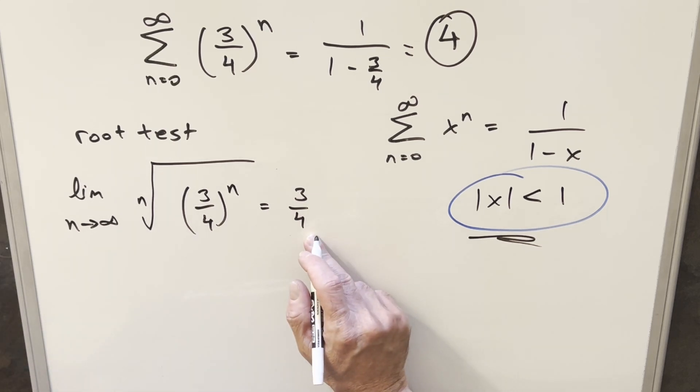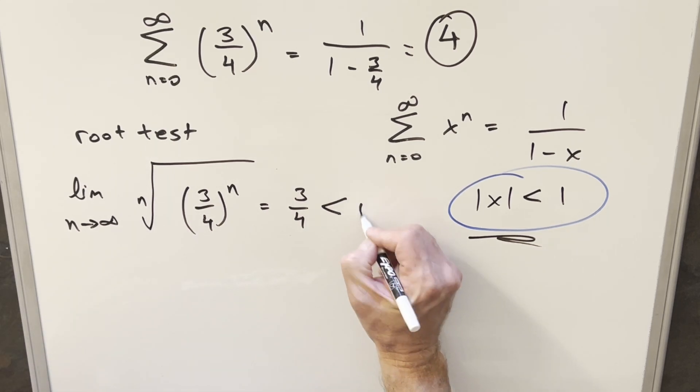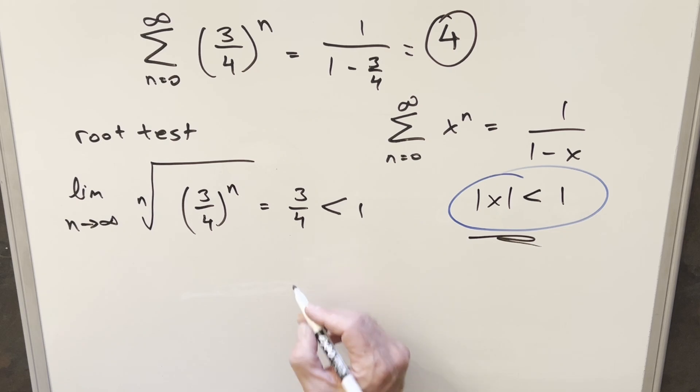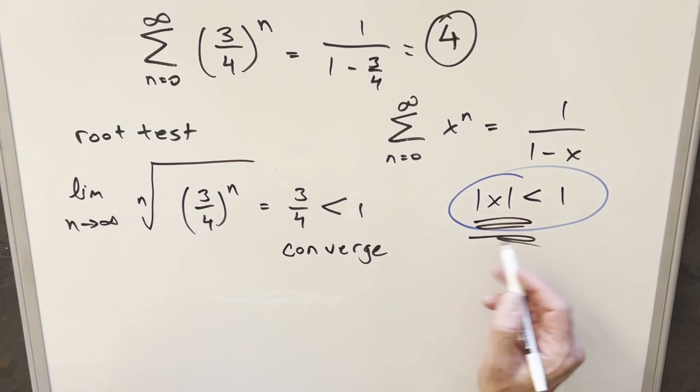Our test for this is comparing our limit to just the value of 1. When our limit is less than 1, we can say that this is going to converge. If it was greater than 1, it diverges. If it was equal to 1, it's inconclusive. Now it's interesting that we say 1 is inconclusive, where over here we're saying it needs to be less than 1. That's true in a geometric series, right?